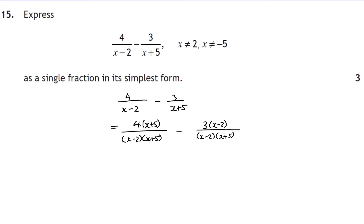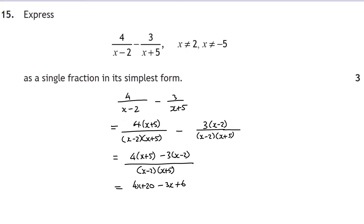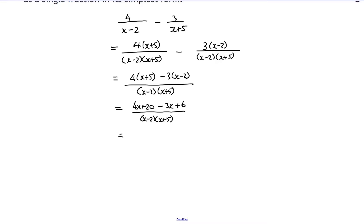Combining into a single fraction then expanding: 4(x+5) − 3(x−2) = 4x + 20 − 3x + 6. Watch the sign on −3×(−2) = +6, a common mistake. Collecting like terms on the numerator gives x + 26, over (x−2)(x+5). Leave the denominator in factorised form — that is the simplified answer.